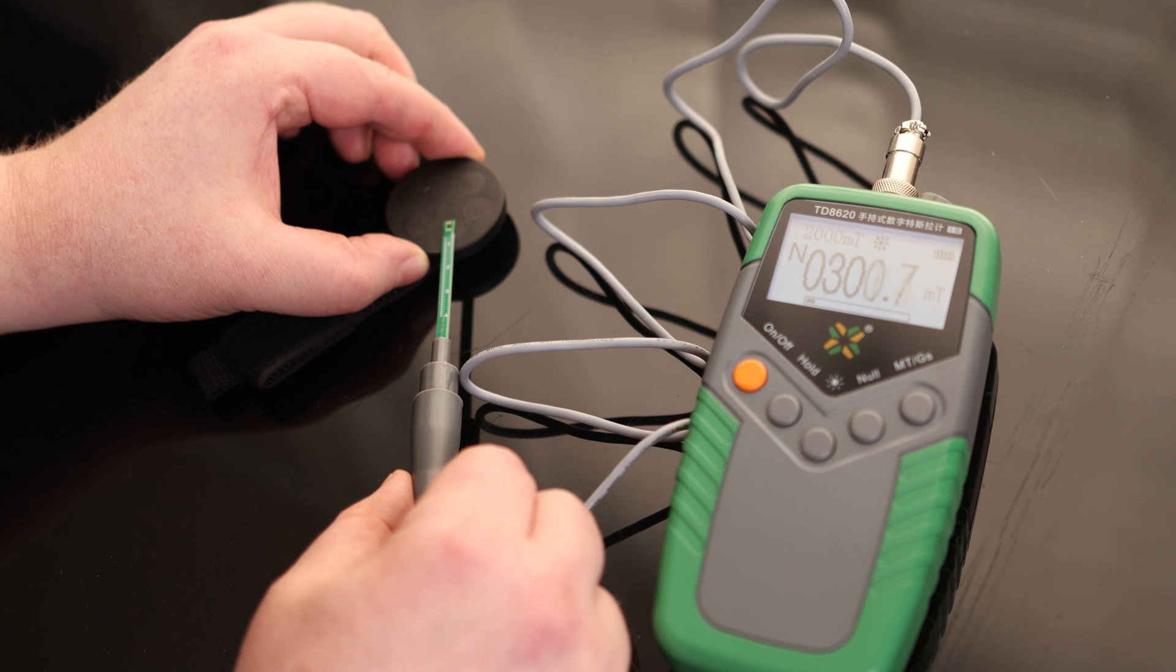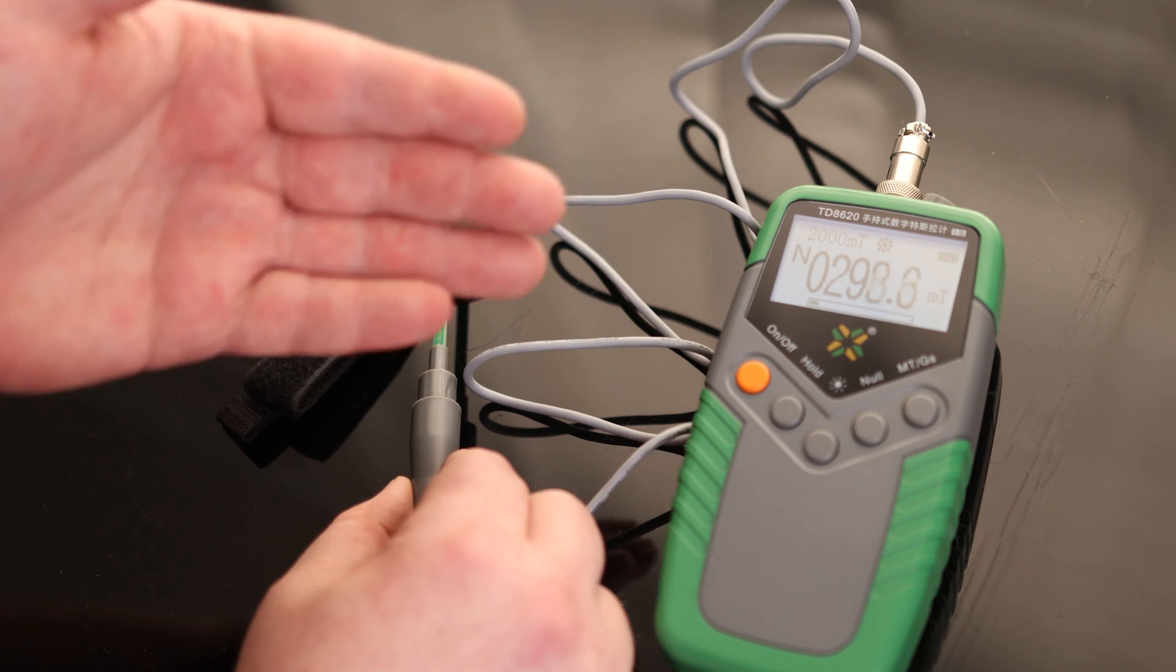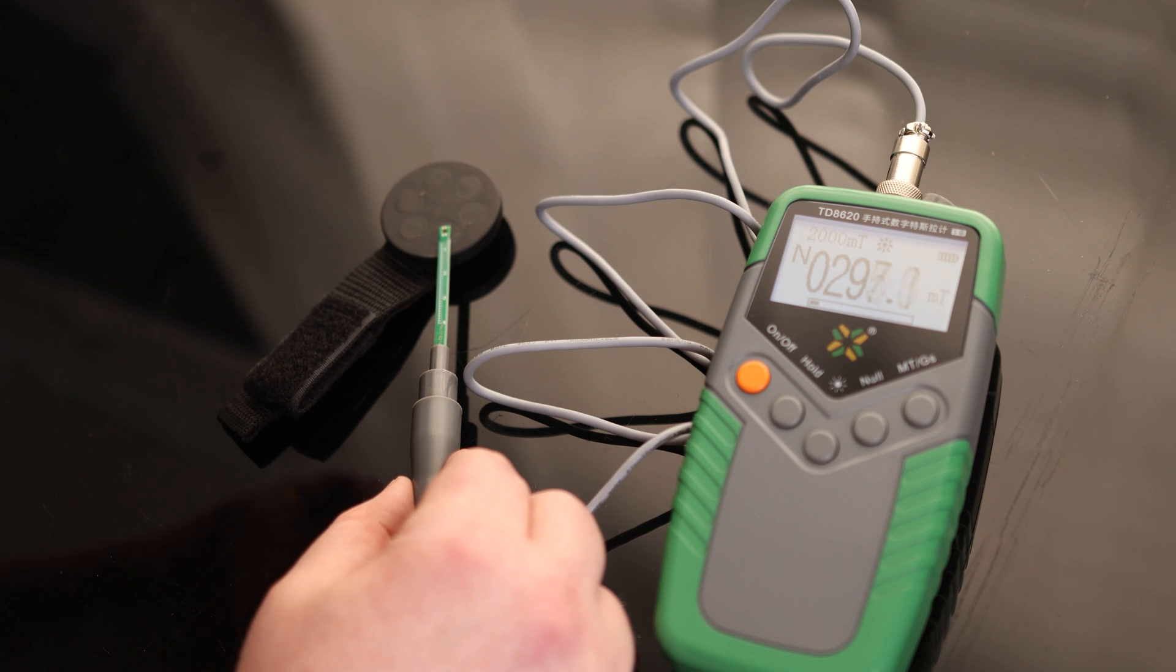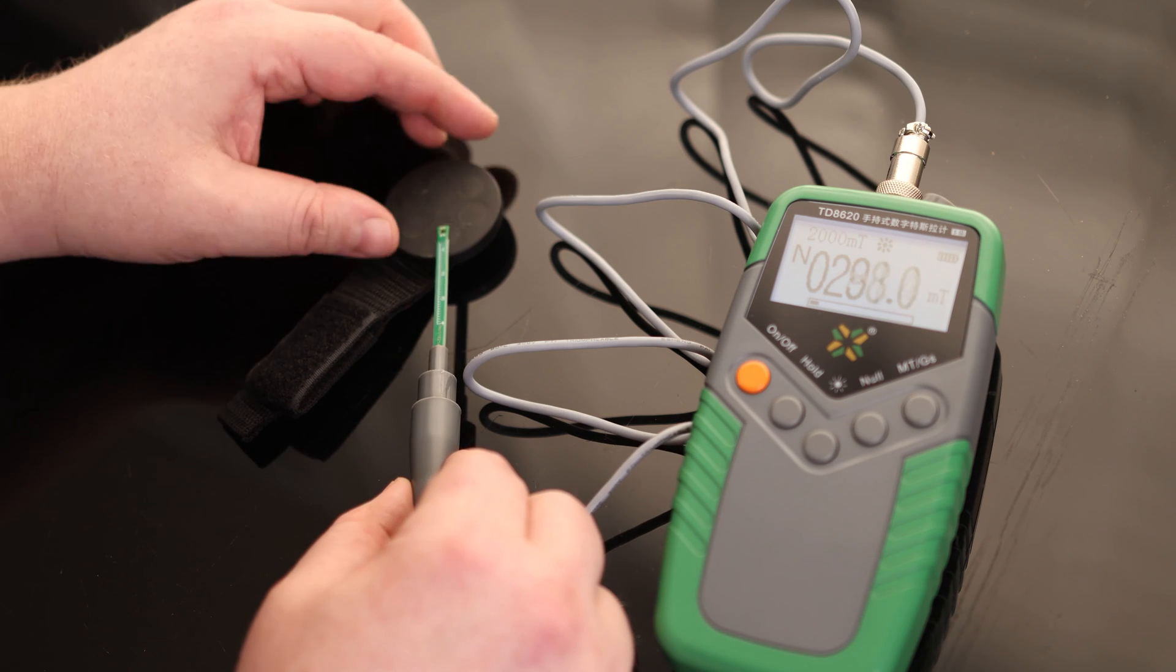So I want to put it right next to it. I am getting about 300 milliteslas. The fact that that's so close to 300 means that they probably put a specific magnet in here, and this can read that fairly accurately.